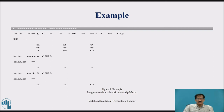any(x) means if any element of a column is non-zero, the condition returns 1. So the result is [1, 1, 1]. all(x) will give [1, 1, 0] because in the third column the last element is 0.